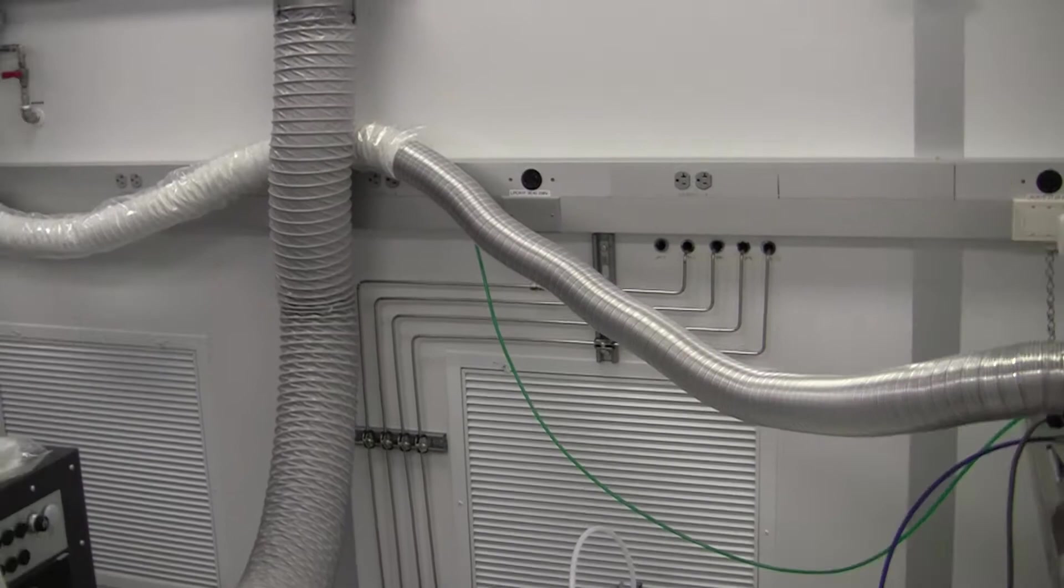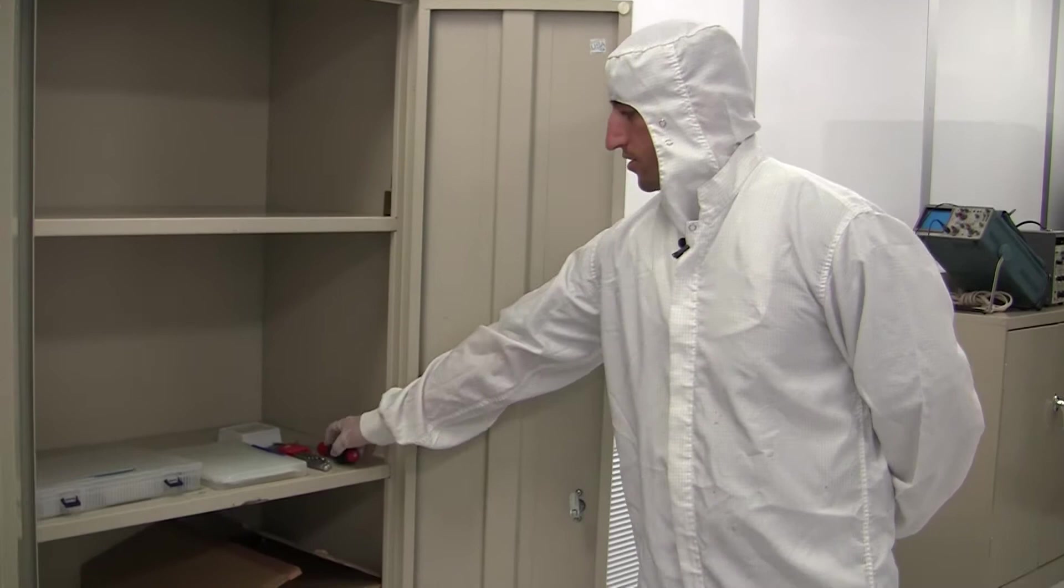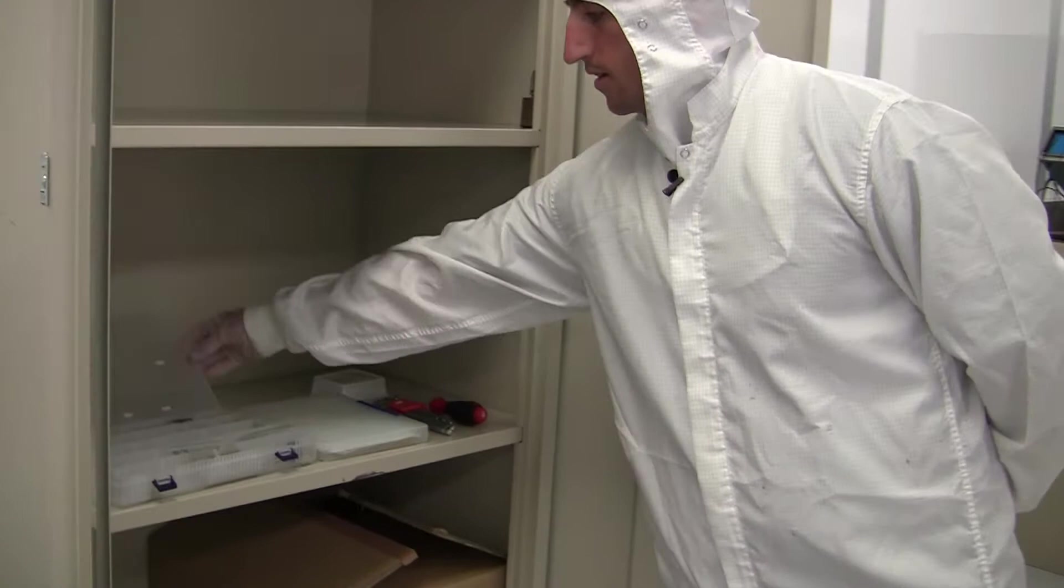Located across from the tool is the cabinet here where inside you might find some extra miscellaneous components that could be useful in operating the equipment. We have a wrench, some Allen wrenches as well as a parts box. I am going to get some parts ready now for the rest of the operating of the tool.